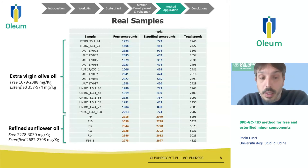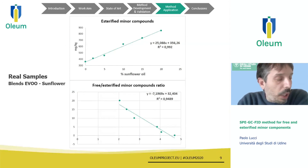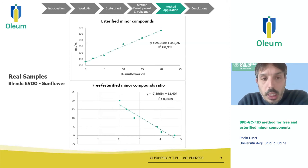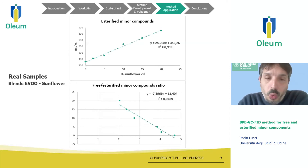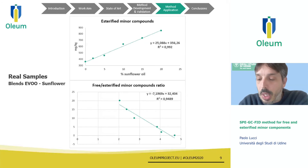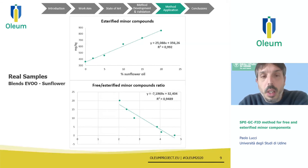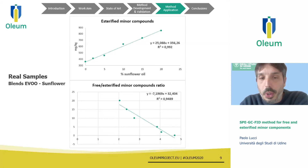This goes beyond the olive oil project and the objectives we fixed at the beginning of the project. However, it is interesting to look at a small study we conducted to give an idea of the potential of the methodology. We added different percentages of sunflower oil to pure extra virgin olive oil, from 2% to 20%. Even when only 2% of sunflower oil was added to the virgin olive oil, an increase of around 14% of the esterified fraction was observed, as well as a decrease of 8.7% of the ratio between free and esterified fractions.